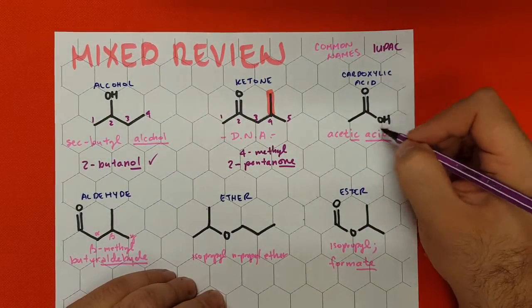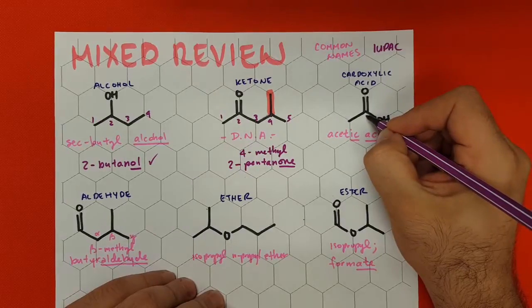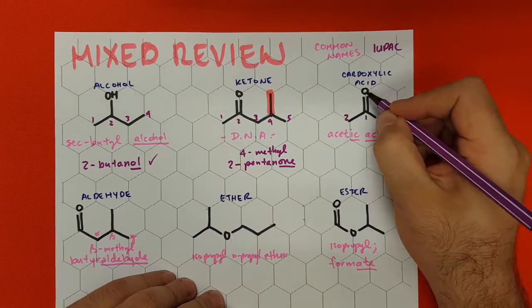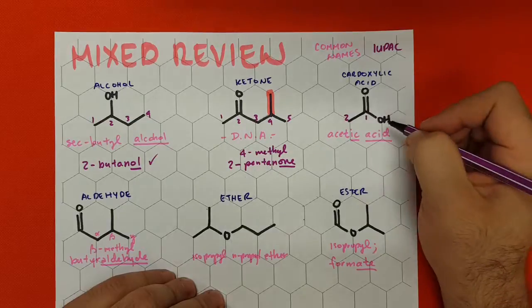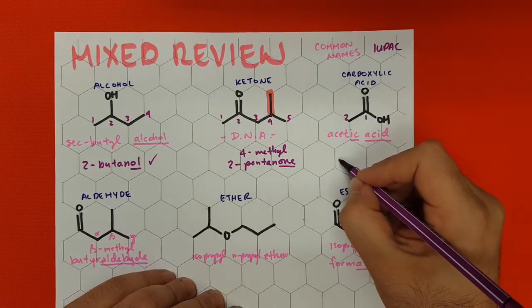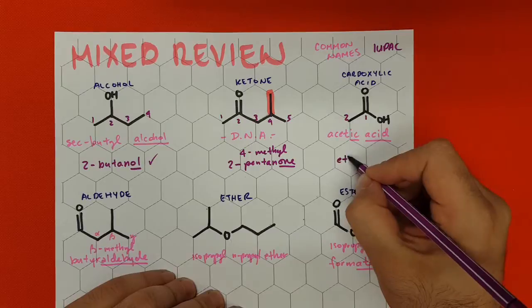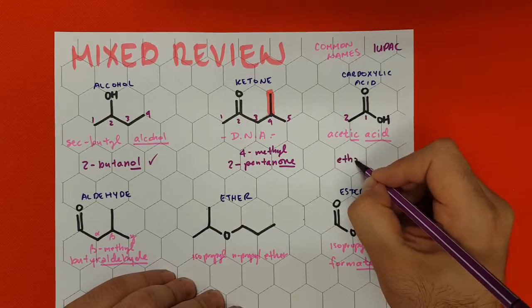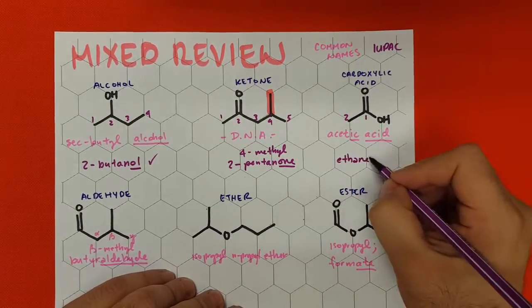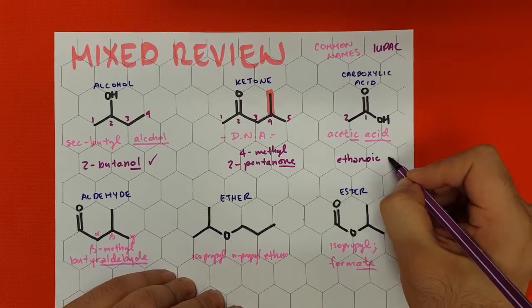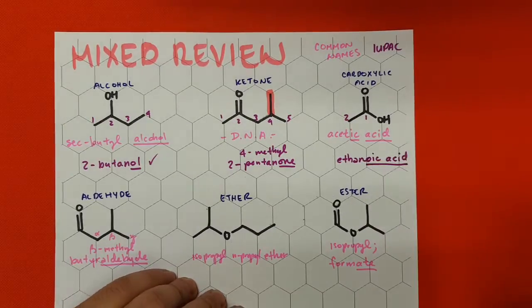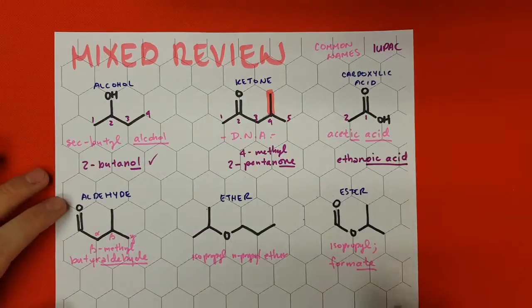Continuing with the carboxylic acid — remember, the carboxylic acid carbon is always number one, where the OH and the double bond O converge. So we have two carbons: that's 'etha' or ethane. We cut off the E and add the IUPAC ending '-oic acid,' giving us ethanoic acid. And we're done with that exercise.